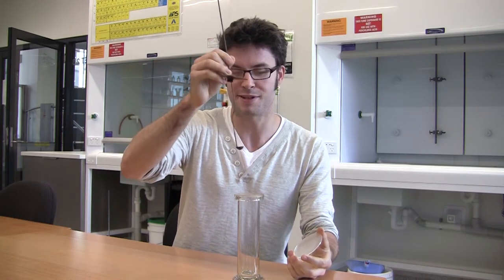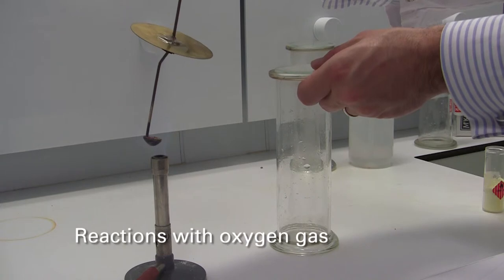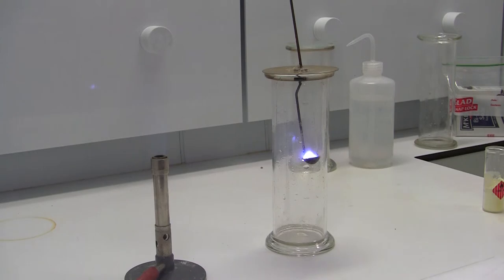We're going to take our deflagrating spoon and lower our elemental sulfur into the jar. What we should see is it igniting. There should be a blue flame from there and there should also be gas being evolved from that reaction.